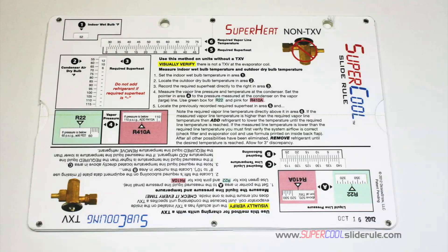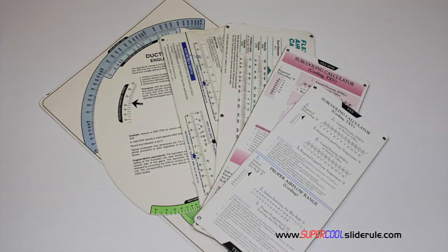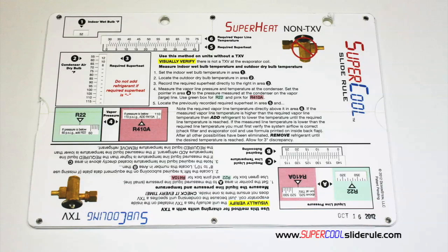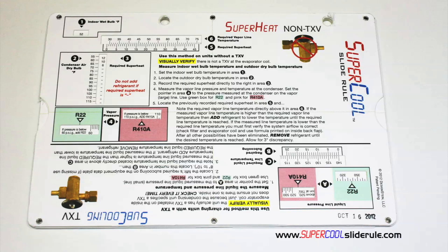I'd like to take a minute to introduce you to the coolest tool in the HVAC industry. Historically, technicians have carried four or five different slide rules — one for R22, one for R410A, one for metal duct sizing, one for flexible duct sizing, and yet others for diagnostics or troubleshooting. Thankfully, those days are gone. This one tool will allow you to charge a system with R22 or R410A, in either the superheat or subcooling method.